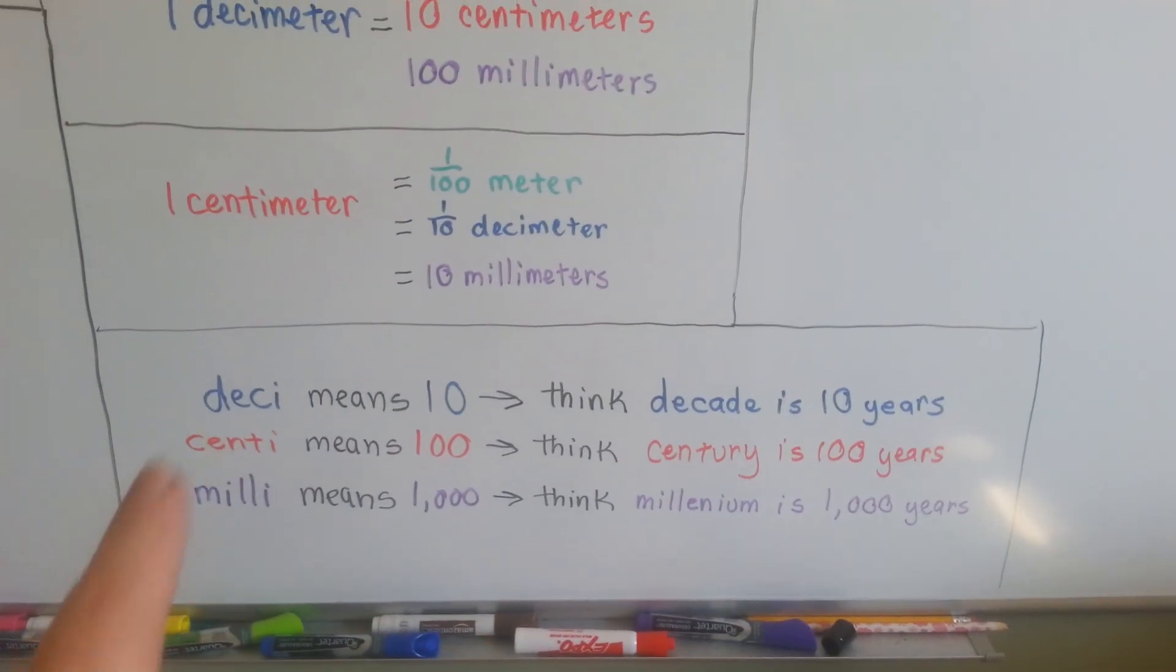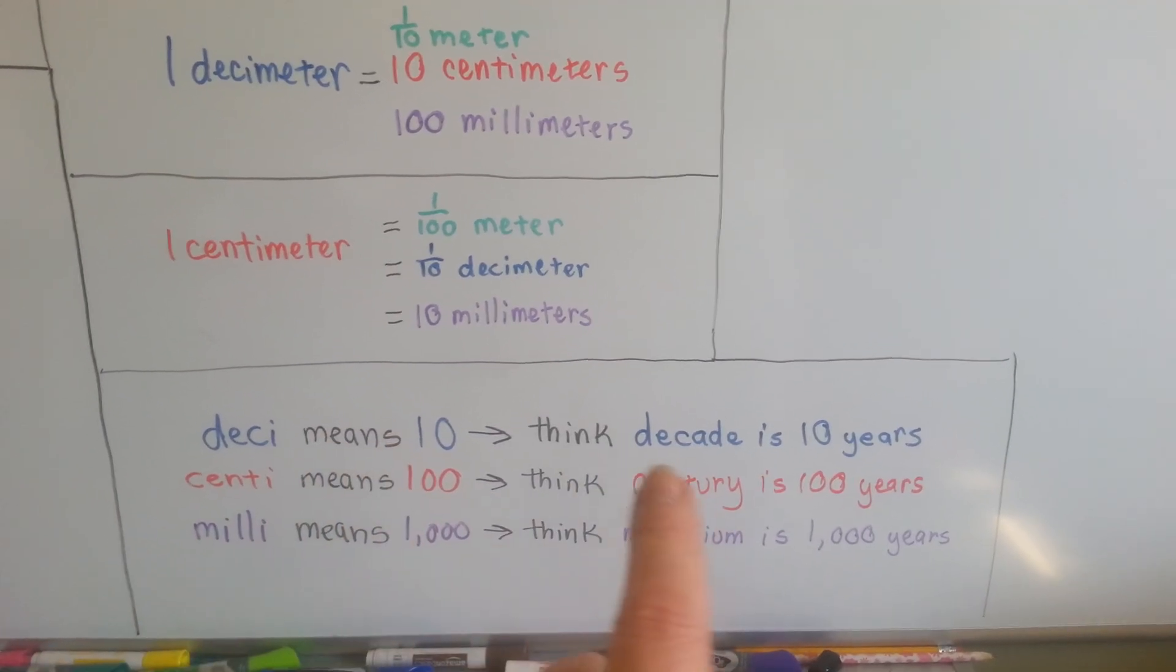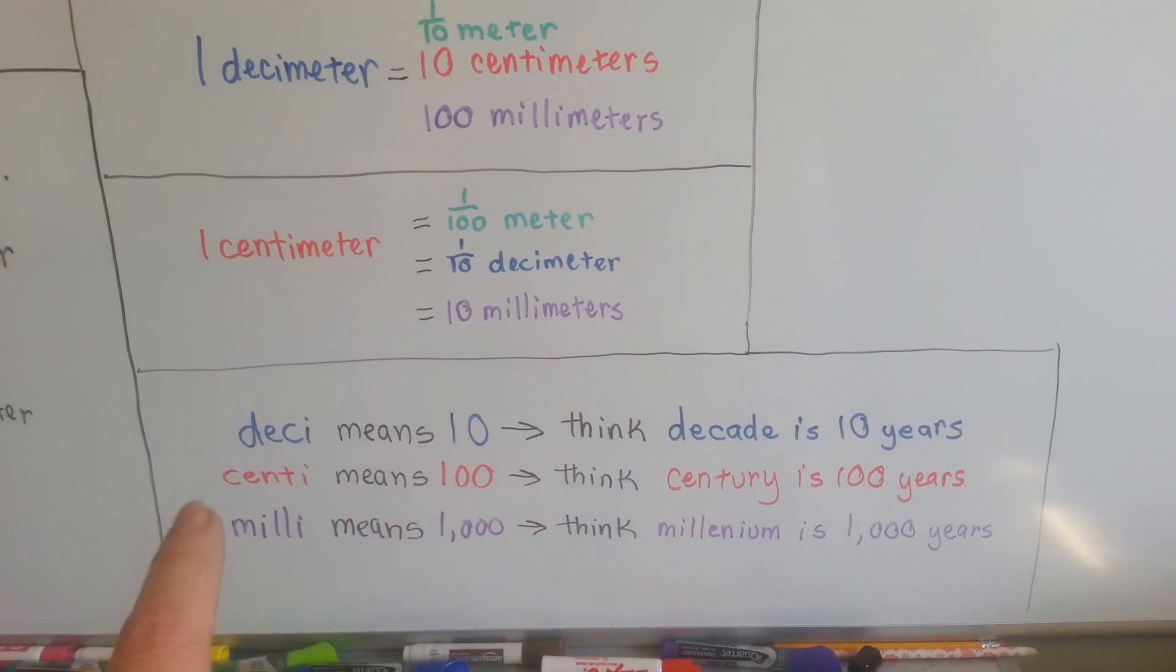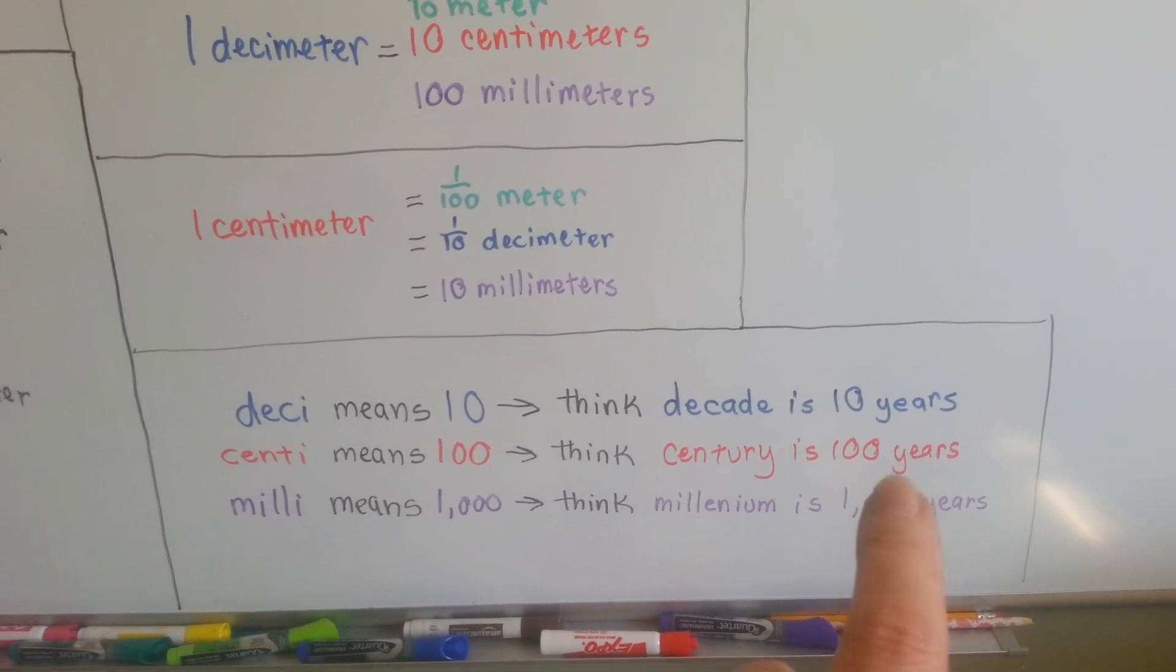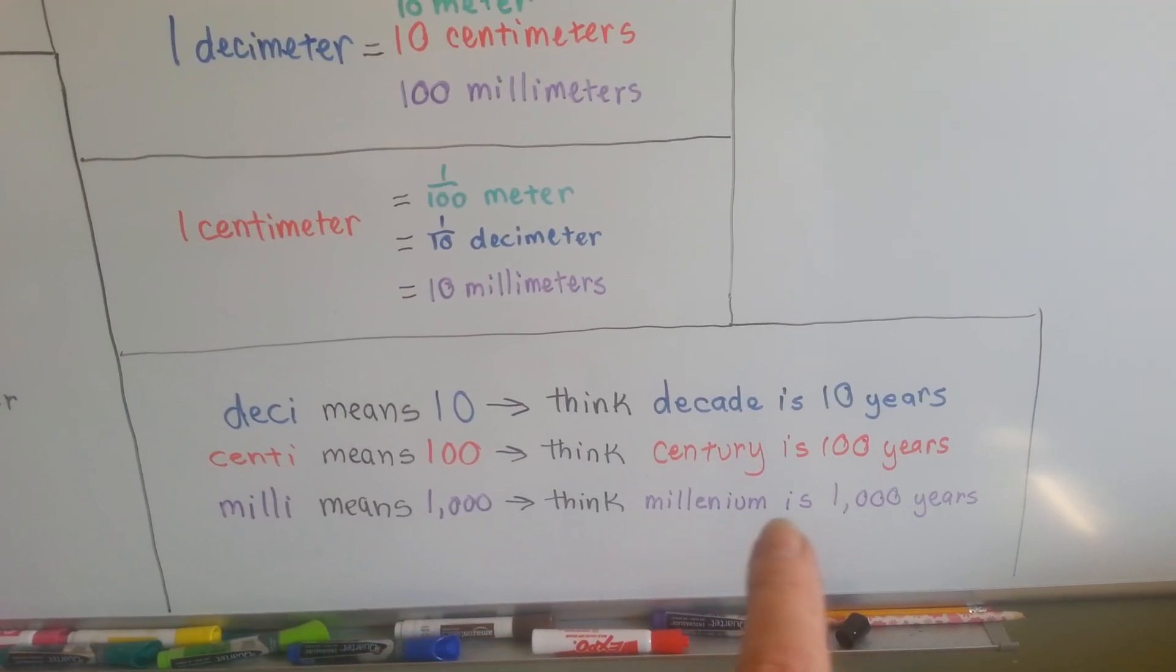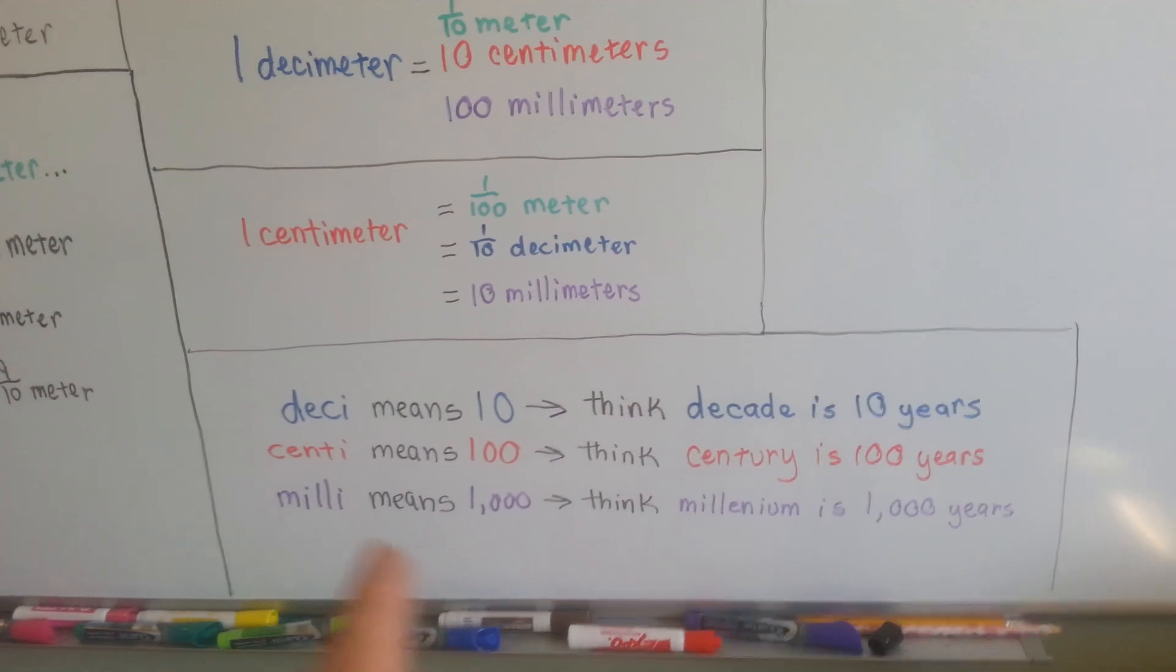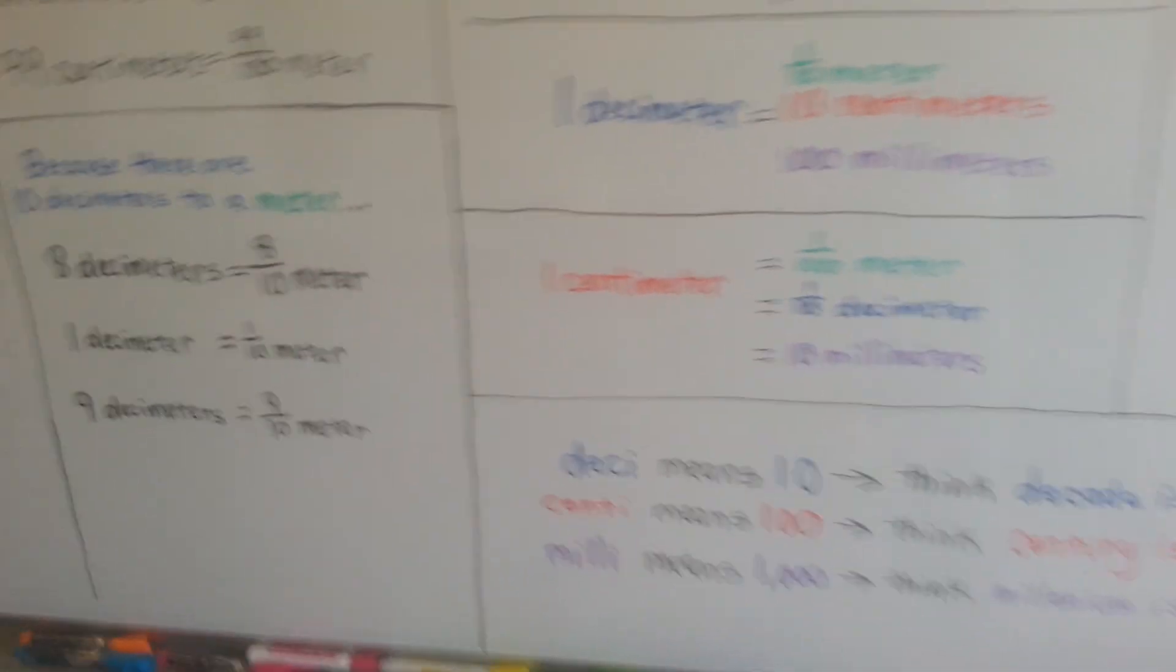One way to remember them is the prefix deci means ten, like a decade. A decade is ten years. Centi means a hundred, like a century is a hundred years. And milli means a thousand, like a millennium is a thousand years. So you can see how the prefixes are the same pretty much for both, because they both mean roughly the same thing.